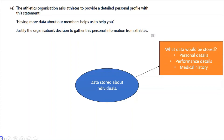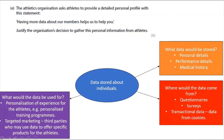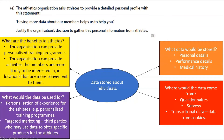Thinking about what data will be stored: personal details, personal performance details, and medical history. Where will it come from? Questionnaires, surveys, transactional data, and data from cookies. What will it be used for? Personalization of experience for the athletes, personalized training programs, targeted marketing, and third parties may use the data to offer specific products. Now the important part — the justification — is where I get my eight marks.